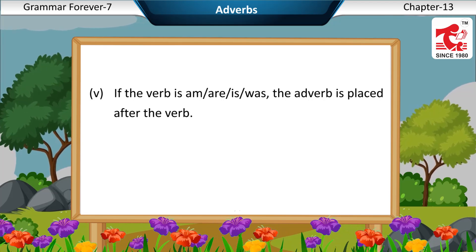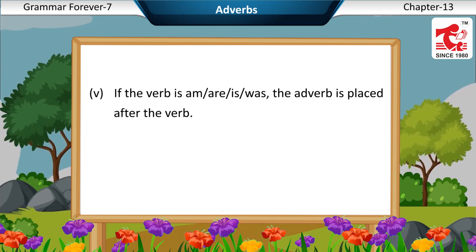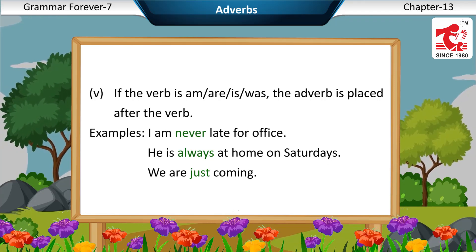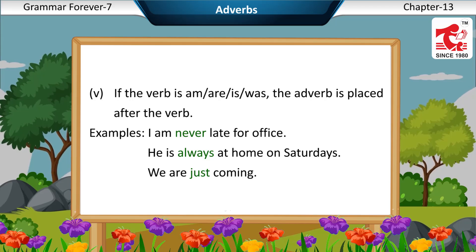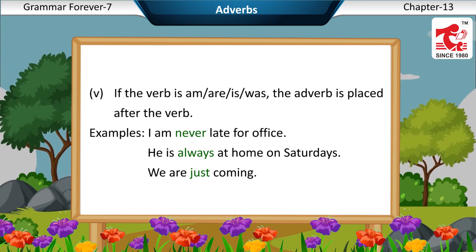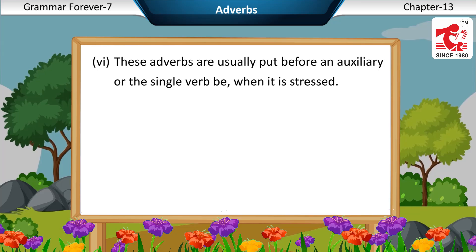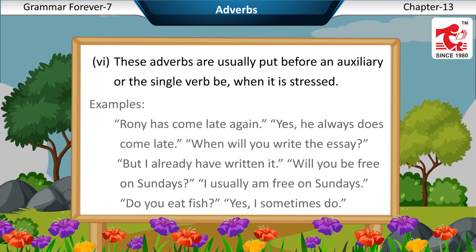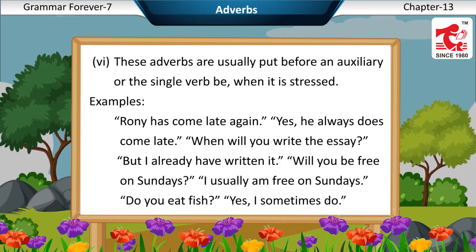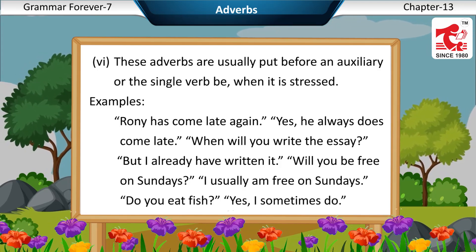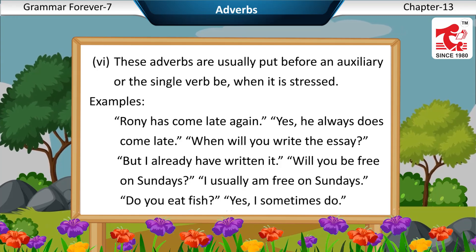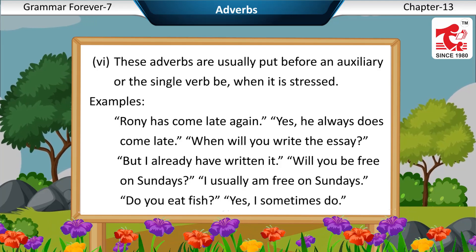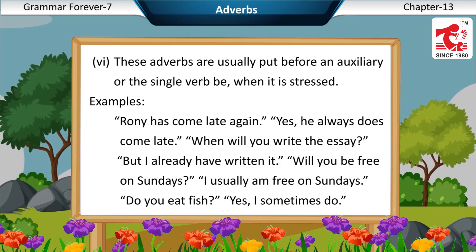Fifth, if the verb is 'am', 'are', 'is', or 'was', the adverb is placed after the verb. Examples: I am never late for office. He is always at home on Saturdays. We are just coming. Sixth, these adverbs are usually put before an auxiliary or the single verb 'be' when it is stressed. Examples: Roni has come late again. Yes, he always does come late. When will you write the essay? But I already have written it. Will you be free on Sundays? I usually am free on Sundays. Do you eat fish? Yes, I sometimes do.